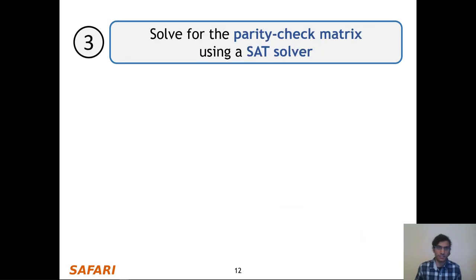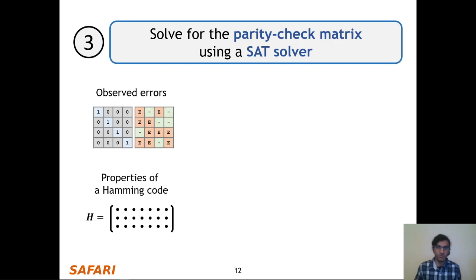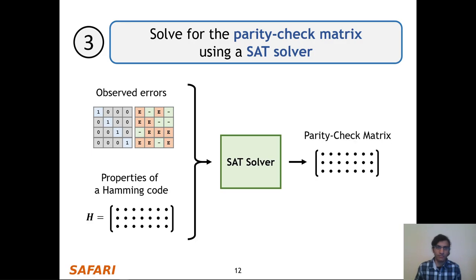Finally, we solve for the parity check matrix. To do so, we input the table of possible errors and the basic properties of a Hamming code as constraints to a SAT solver. Upon evaluating the SAT problem, we get the parity check matrix that's responsible for the observed error patterns.